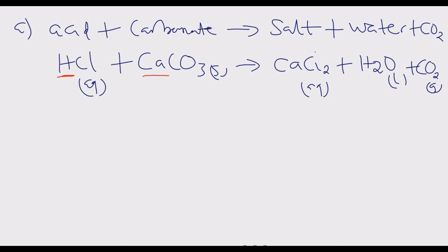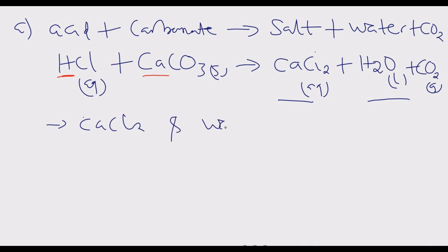Calcium chloride is aqueous — that is the salt. Then we have water as the liquid, and carbon dioxide as a gas. So the other two products are calcium chloride and water. That is the answer.